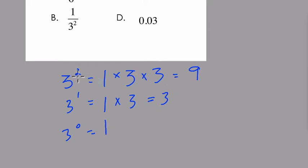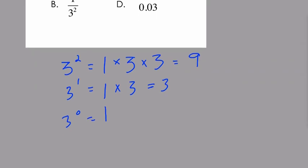In our first row here, there is an exponent of 2 and there are two 3s. With an exponent of 1, there was 1 three, so with an exponent of 0, there are 0 threes, and that 1 is left over.